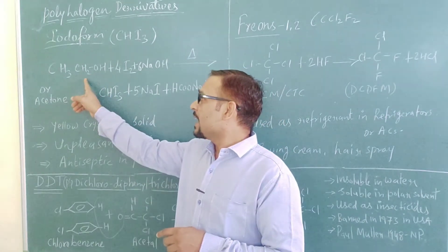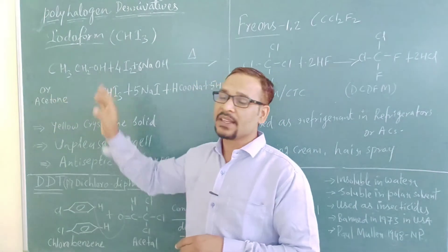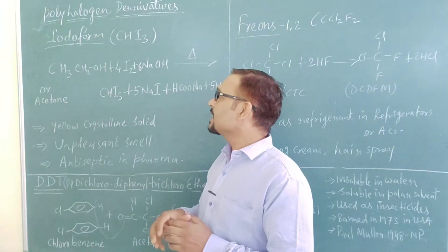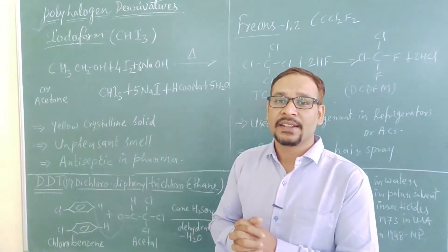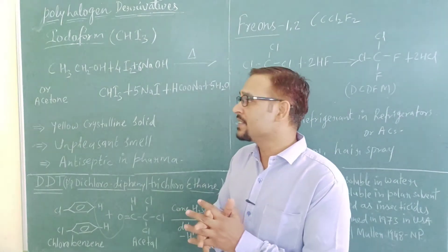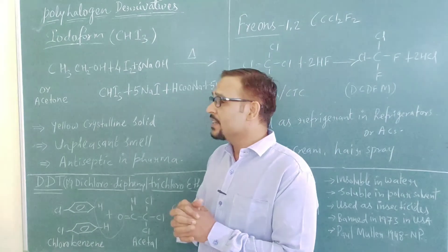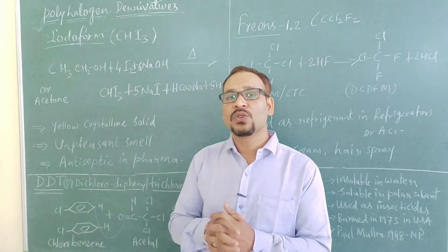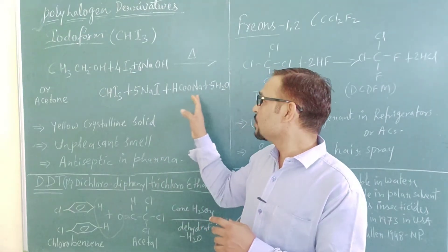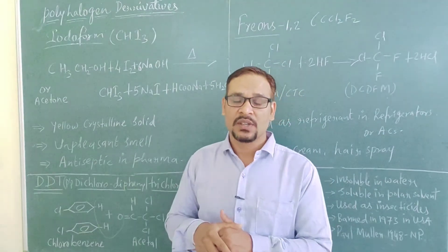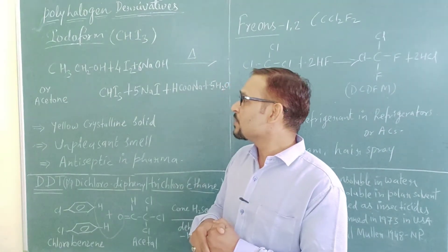Now how is it prepared? It is prepared by ethyl alcohol or acetone. Here I have taken ethyl alcohol. When ethyl alcohol reacts with iodine and sodium hydroxide base, when they are heated, then we will get iodoform along with sodium iodide, sodium formate, and water molecules.